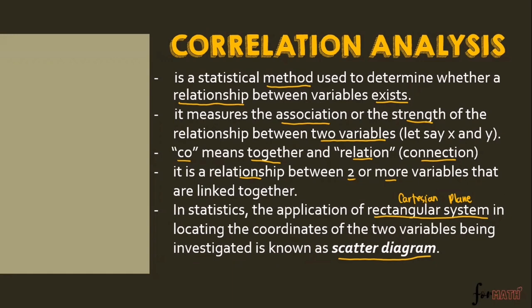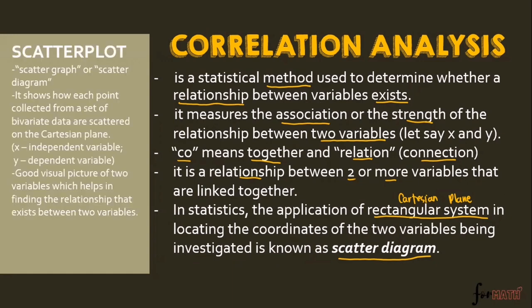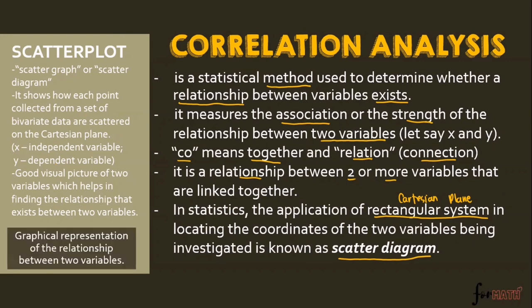It is a relationship between two or more variables that are linked together. In statistics, the application of the rectangular system — the Cartesian plane — in locating the coordinates of two variables being investigated is known as a scatter diagram. The scatter plot diagram tells us the trend line of the two variables.